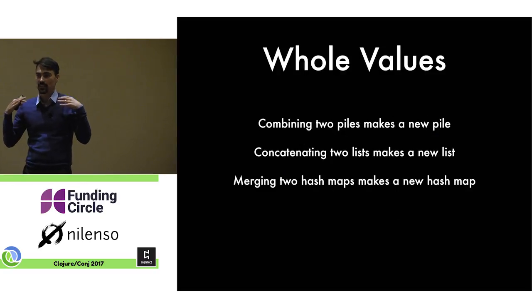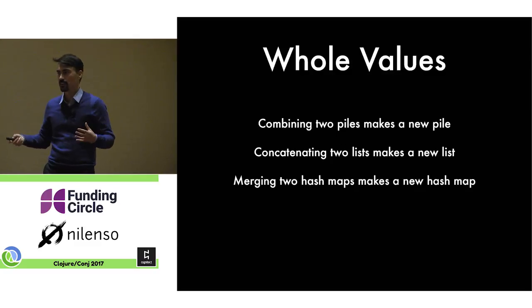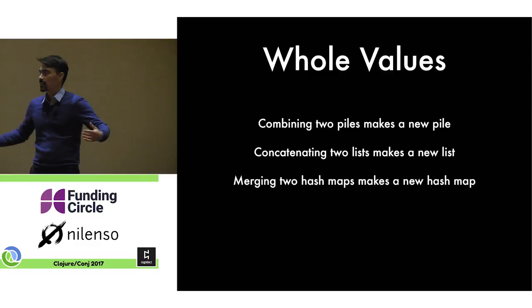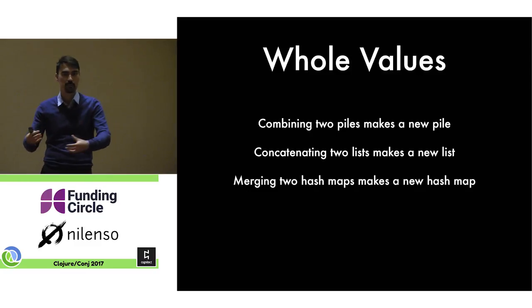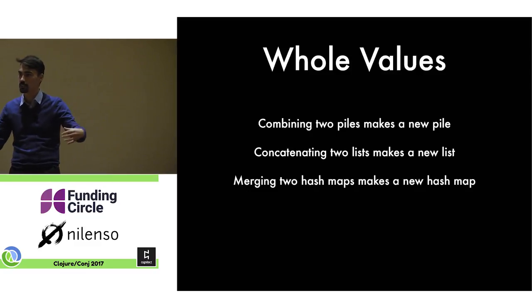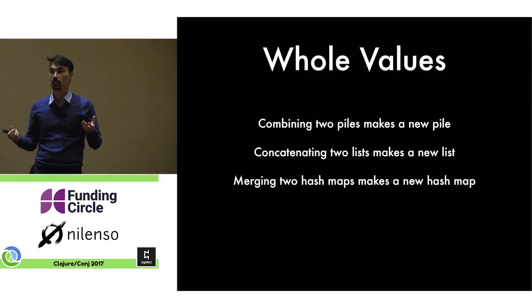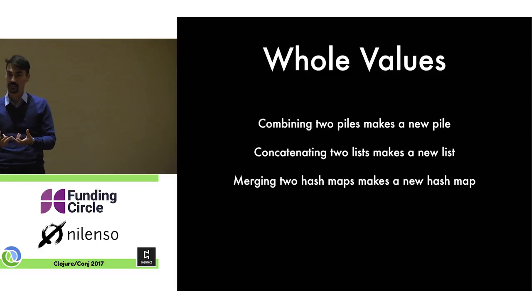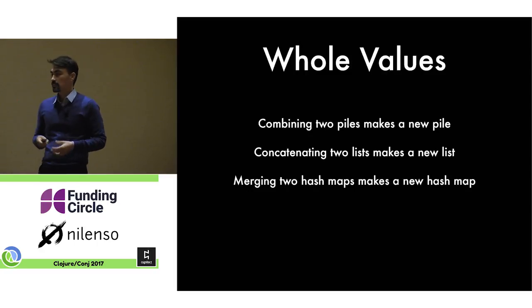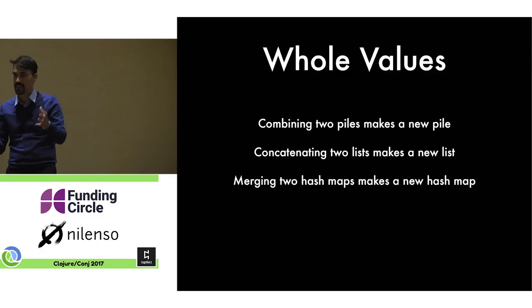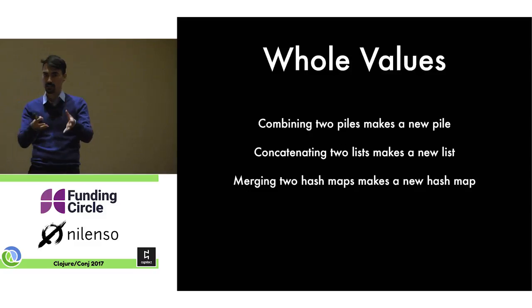Now, I like to think of this as whole values. This is an idea from John Hughes and this is how I think about it. If we have two piles, we combine them into a new pile. So it has all the same operations, the same properties as the individual piles had. Or if we have two strings or two lists and we concatenate them, we have a new list. We haven't changed types. Same with merging two hash maps. Merge two hash maps, you have a new hash map. We're maintaining the space we're in. We're still using the same type.